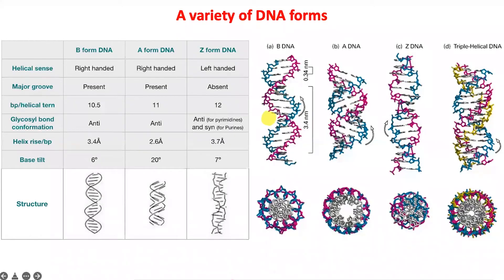The base pairs per helical turn are slightly different. The A form of DNA is a little more compact. This is one turn, and this is one turn. You can see that the base pairs per turn seem to change. There are other small differences which finally lead to different conformations of DNA which you see, and there are biological implications of these different forms.